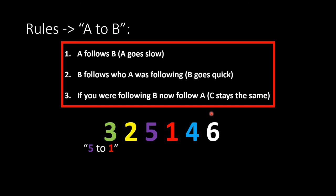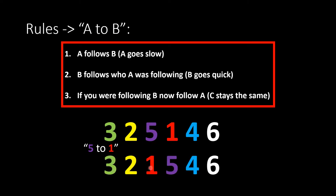Here's an example. The bells are in the order three, two, five, one, four, six — just some random order. The change is 'five to one'. Ringer A, the five, follows ringer B, the one. Ringer B, the one, follows the bell who A was following — so the one now follows the two, going quickly to achieve that. The four, which was following ringer B, now follows ringer A, the five. So the new order is three, two, one, five, four, six.